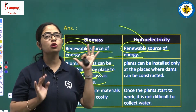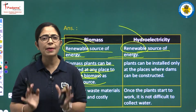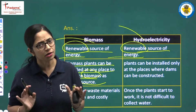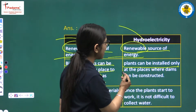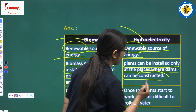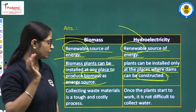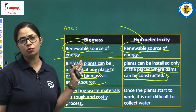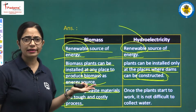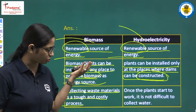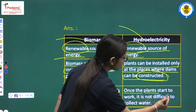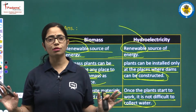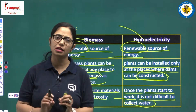A biomass plant can be installed at any place to collect waste and produce biogas. However, a hydroelectricity plant can only be constructed where a large open area is available to build dams. Collecting waste material for biomass is a tough and costly process, but once a hydroelectric plant and dam are constructed, collecting water is easy and straightforward.